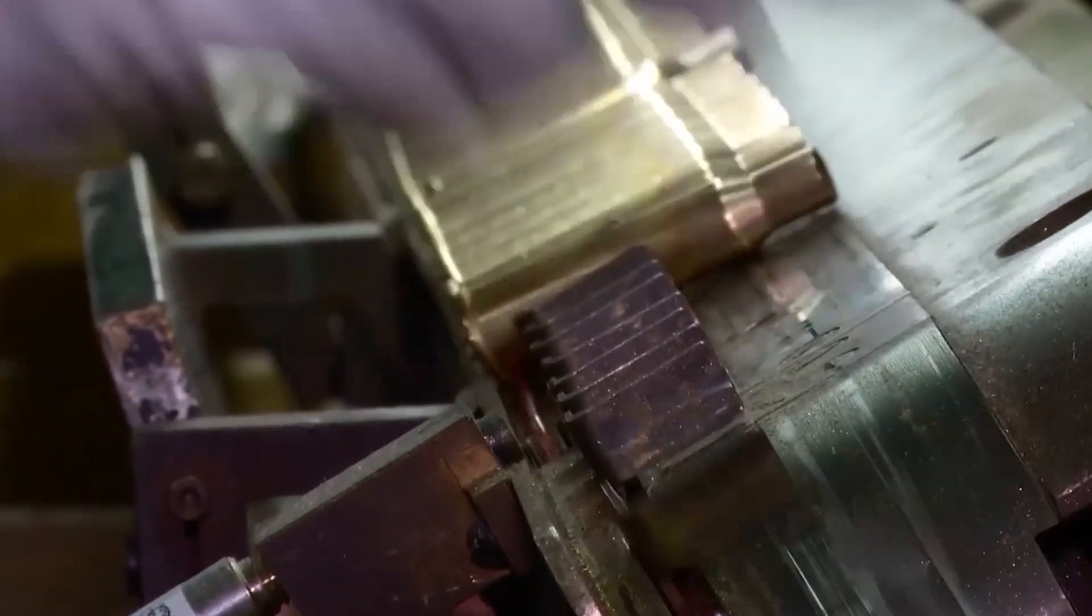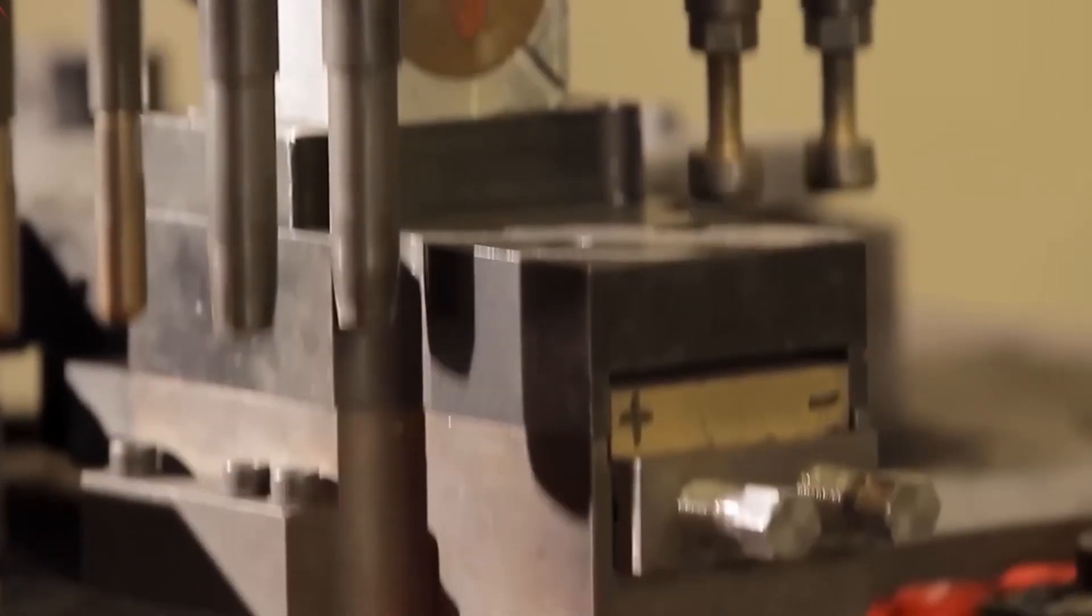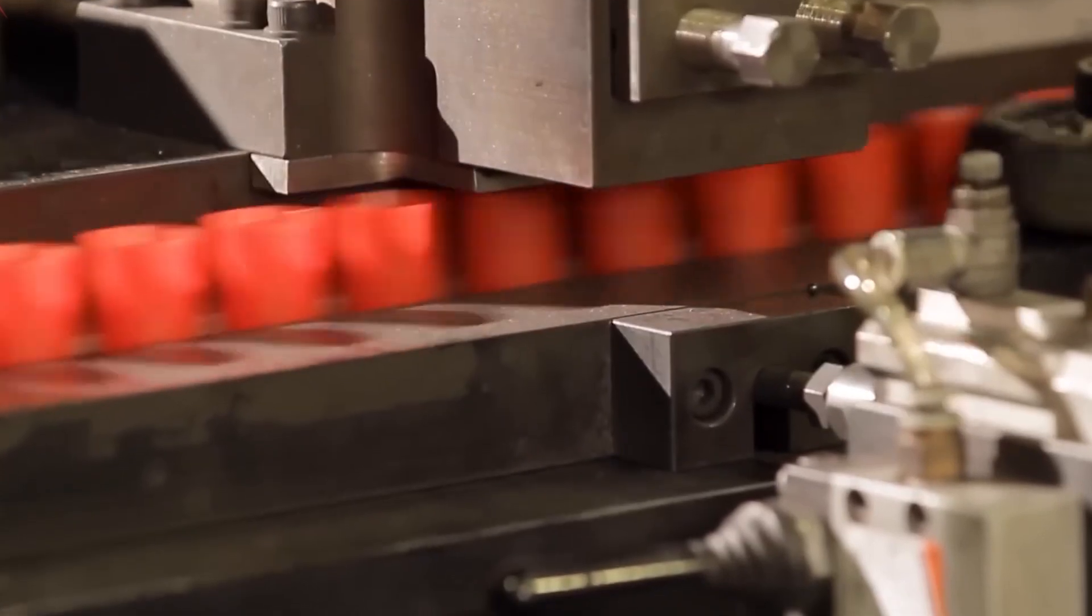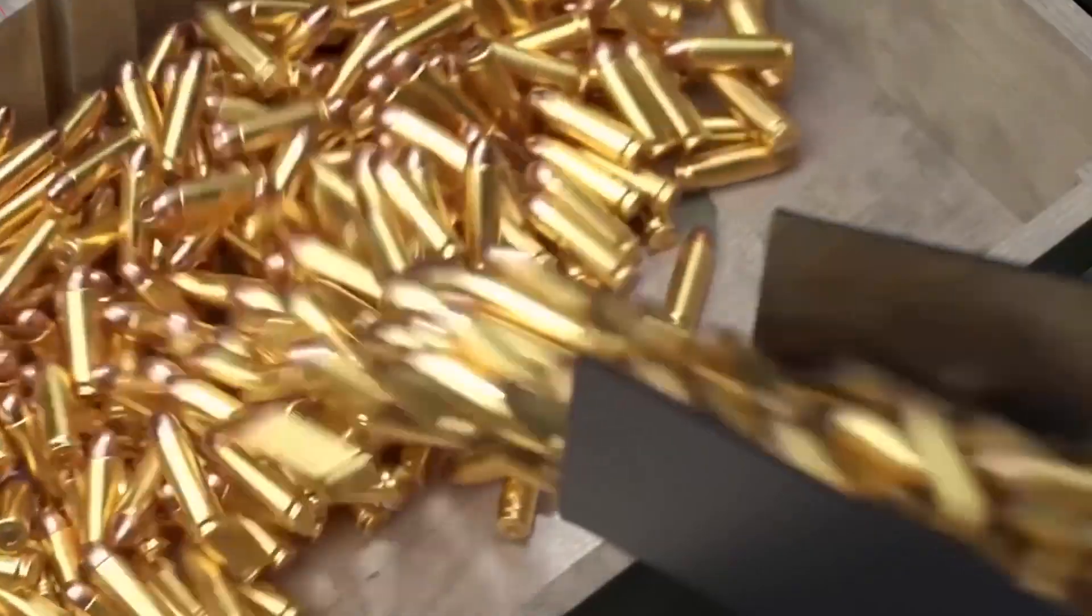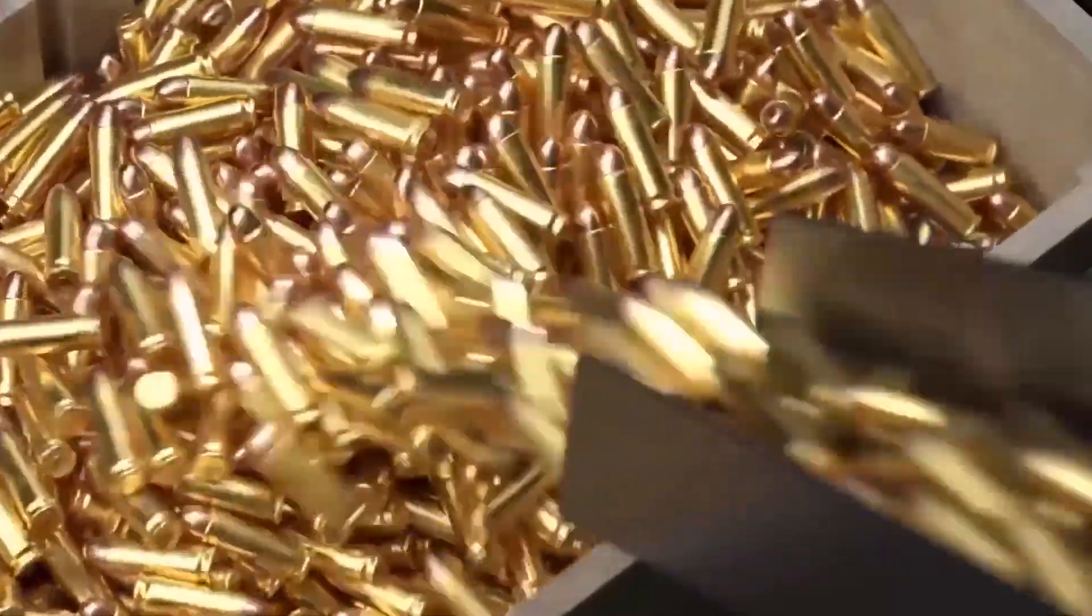How 12 billion bullets are made each year in an ammo factory. Over 12 billion bullets are manufactured each year in the United States alone. That's enough ammunition to circle the earth more than five times if laid end to end.